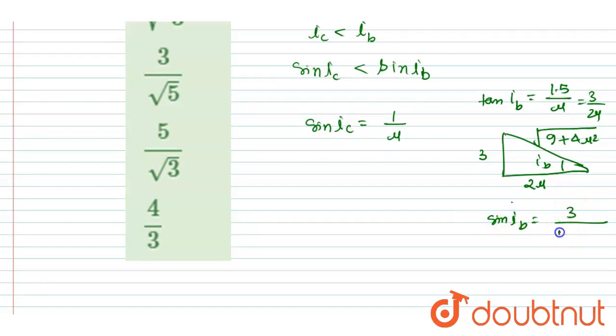Right, okay. So just put the values now. I will square both sides. So now if I will see here, 1 by mu square should be less than 9 divided by 9 plus 4 mu square.